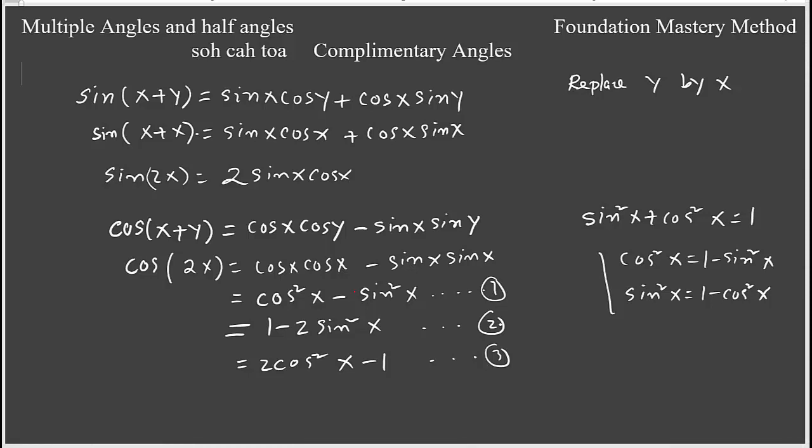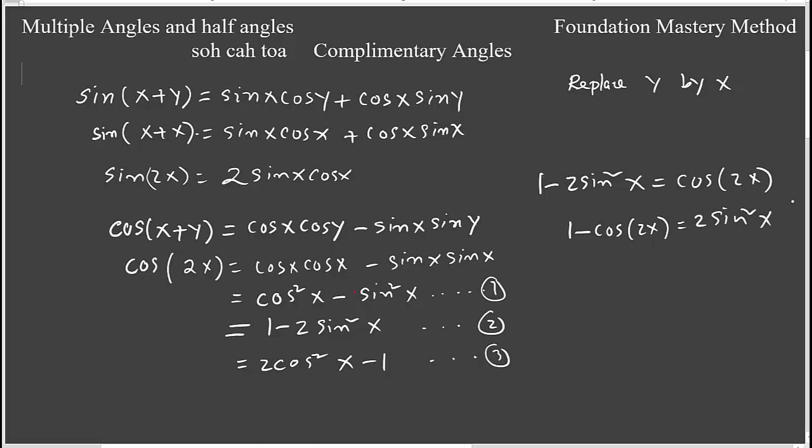So how do you find a half angle formula? We'll see in a minute. We have 1 minus 2 sine squared x is cosine 2x. Now we can say if you move sine squared x on the other side you get 1 minus cosine 2x equals 2 sine squared x. Now divide both sides by 2.